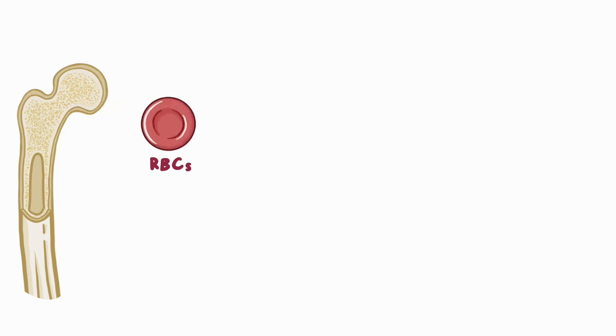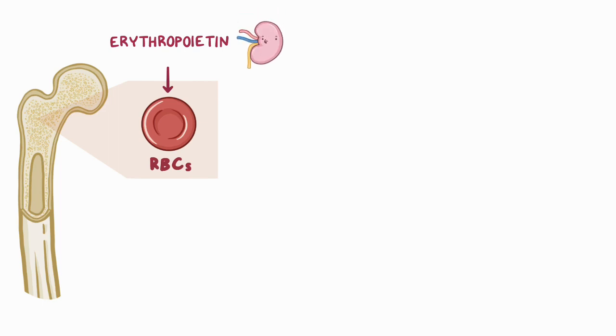RBCs are produced in the bone marrow in response to erythropoietin, which is a molecule secreted by the kidneys in response to low levels of oxygen in the blood.